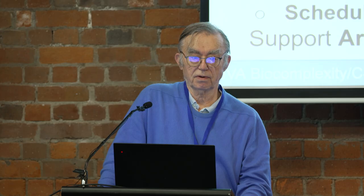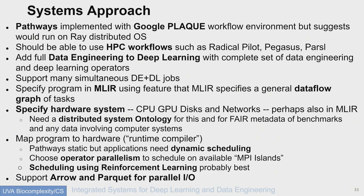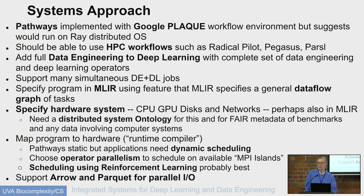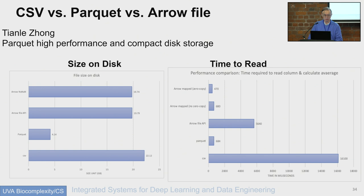To specify a general data flow graph — as Spark pioneered, and TensorFlow and PyTorch are just data flow graphs — we will use MLIR. A non-trivial problem is specifying the hardware; there doesn't seem to be an agreed ontology for the hardware you want to map to, but if you want to write a general mapping program you need a hardware specification. Then we have the MLIR-based runtime compiler. The pathways are static, and we will continue to support Arrow and Parquet — Parquet for disk and Arrow for memory operations.